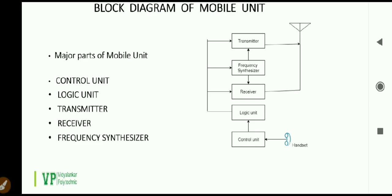The transmitter uses a unit called a duplexer which isolates the transmitter output from the receiver input. If a signal is to be transmitted, the duplexer will connect the transmitter output to the antenna and isolate it from the receiver input.